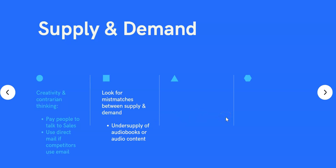Another thing you can do with supply and demand is look for mismatches between supply and demand. For example, right now there's an undersupply of audiobooks, so Audible is a marketplace that is undersupplied. There's not enough content, in contrast to other markets like the Kindle Store, which is perhaps more mature and saturated. We're also seeing a surge in demand for audio content in general, with products such as Clubhouse and podcasts. If you're able to get into that market earlier and ride that wave, you're going to be able to growth hack your product.